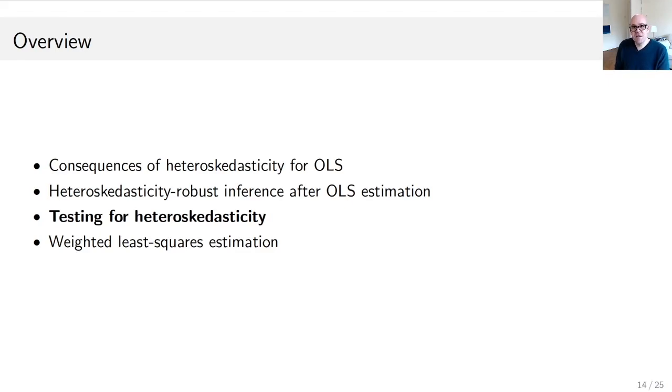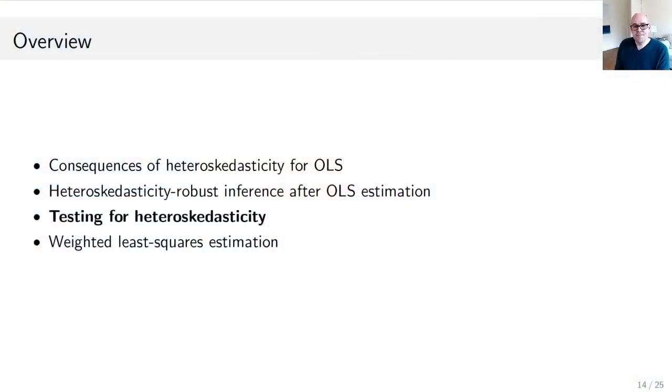This brings us to testing for heteroscedasticity. Now is a natural break point if you'd like to pause. One motivation: you can always compute both standard OLS standard errors and robust standard errors and compare them. If they're not too different, it doesn't matter much. But you might also want to formally test for heteroscedasticity.